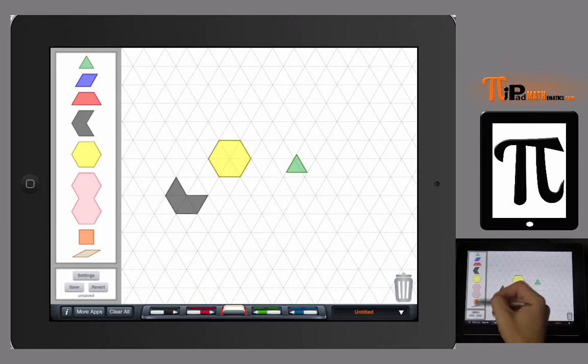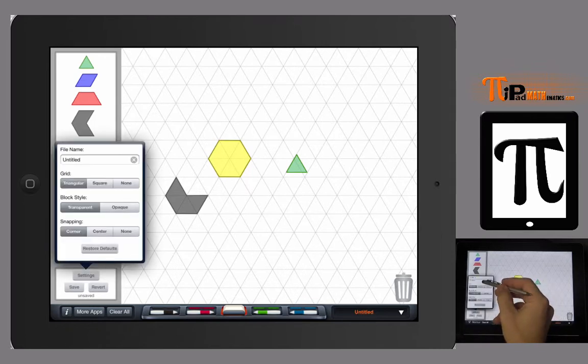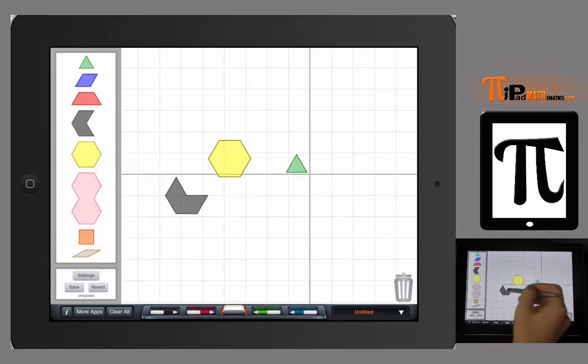Those rotations change when you change your grid pattern. Here's a rotation—it's going to rotate a little bit slower or doesn't rotate as many degrees with each rotation.